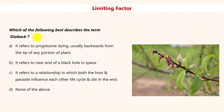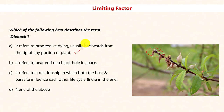Which of the following best describes the term 'dieback'? It refers to progressive dying, usually backwards from the tip of any portion of a plant. The answer is A. Dieback is an important adaptive mechanism for plants in arid environments — to counter lack of water, the shoot dies from the tip while the root remains alive in the ground. During the arid season the shoot dies back, and when sufficient water returns, the root gives rise to a new shoot. Dieback is thus an adaptive mechanism where lack of water acts as the limiting factor.